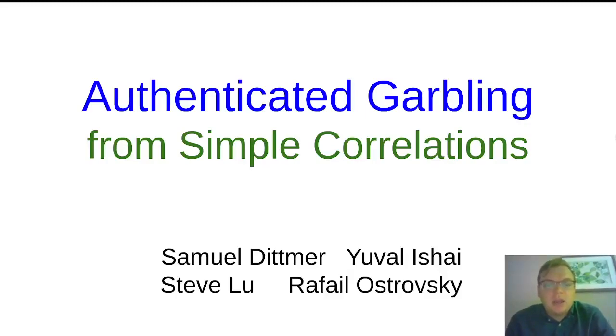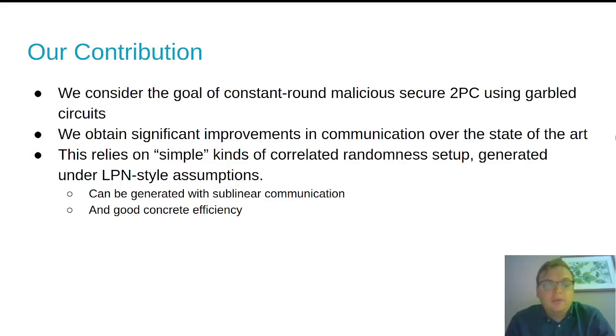I'm Sam Dittmer, and this is joint work on authenticated garbling from simple correlations with Yuval Ishai, Steve Liu, and Ravi Ostrowski. Our aim is to improve the concrete efficiency of constant round malicious secure two-party computation built off of garbled circuits and later authenticated garbling work.